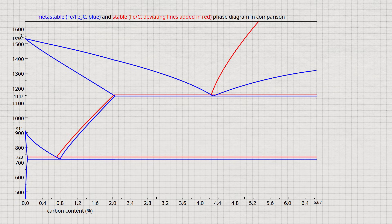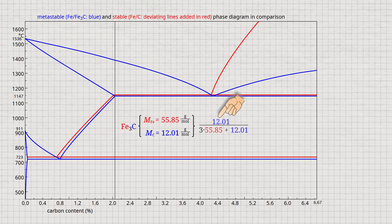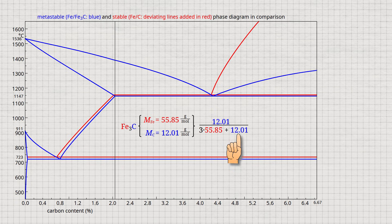This can be shown relatively quickly using the molar masses of iron and carbon. The molar mass of carbon is related to the molar mass of the iron-carbide compound Fe3C with three iron atoms and one carbon atom. This gives a mass fraction of carbon in cementite of 6.67%.